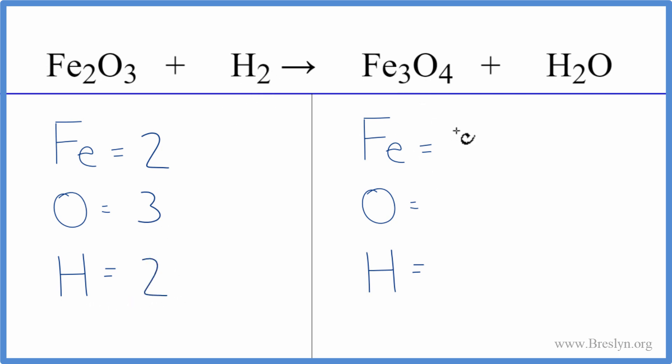On the product side, we have three irons, four oxygens, and don't forget this oxygen here. So we have a total of five oxygen atoms. And then hydrogens, we have two.